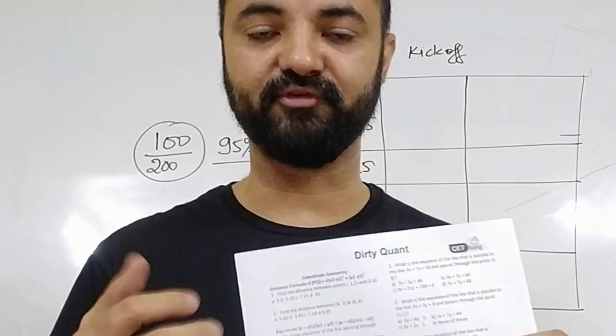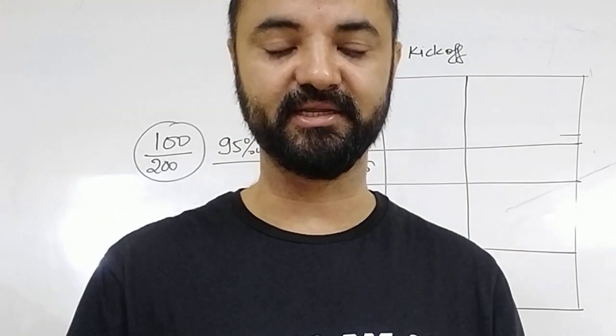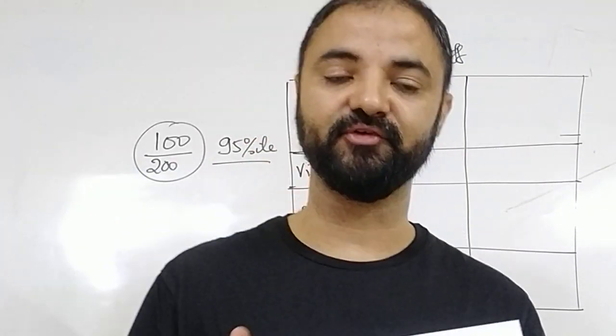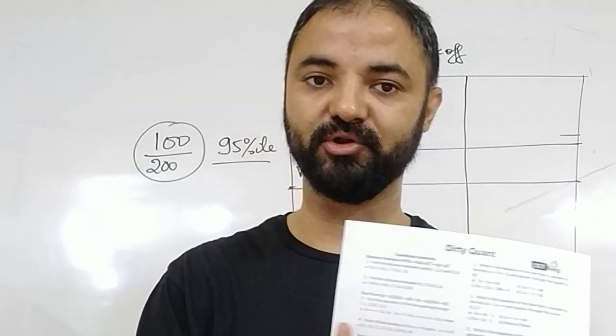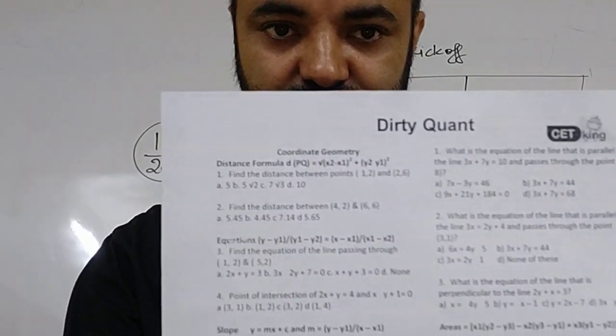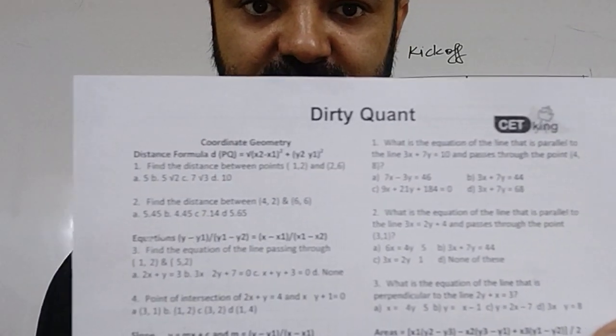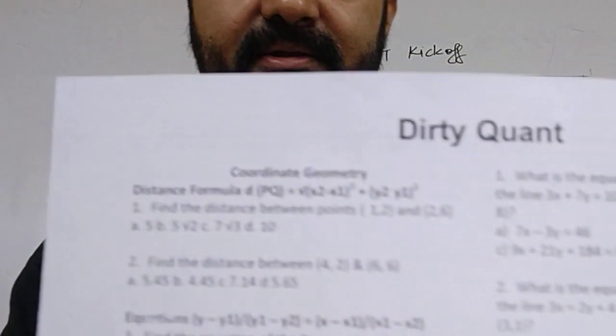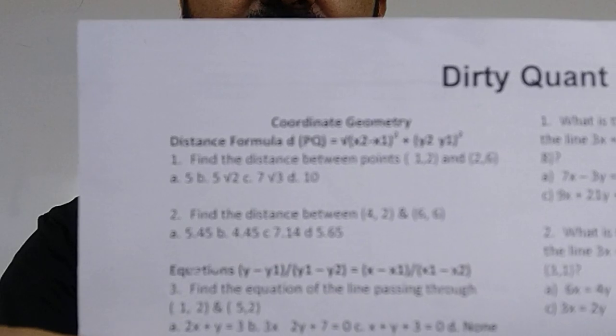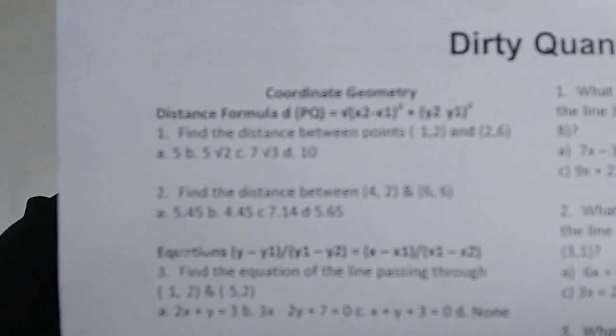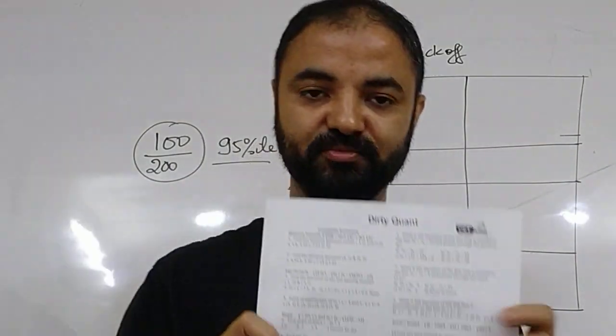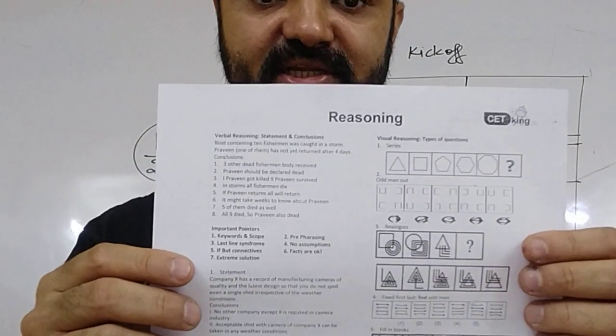So if you are in Mumbai, please do attend the classroom session. If you are non-Mumbai, I am going to upload this video. So this is the normal dirty quant handout — coordinate geometry, set theory, all these kinds of questions. That's a typical coordinate geometry question. Then we will start with visual reasoning and verbal reasoning — all these diagonal-type questions.